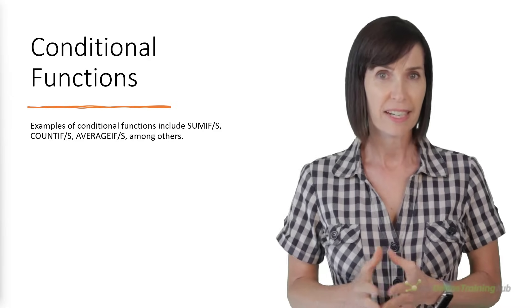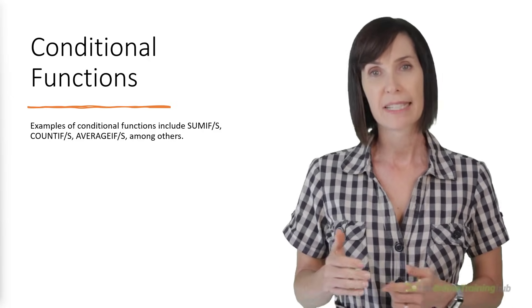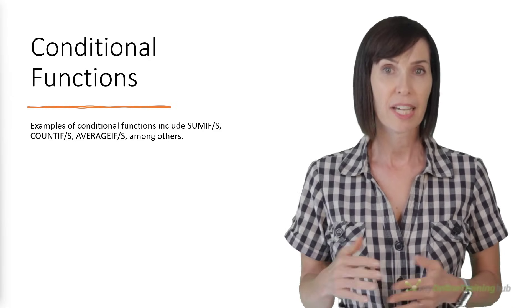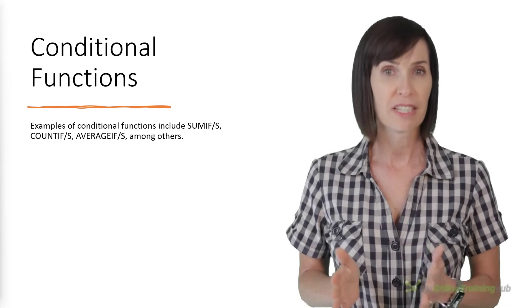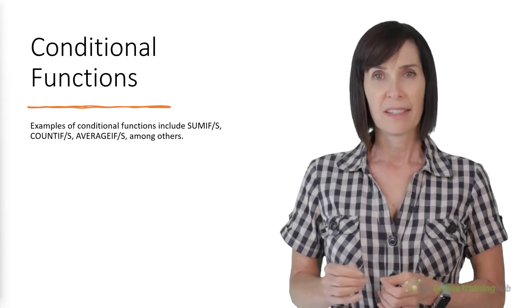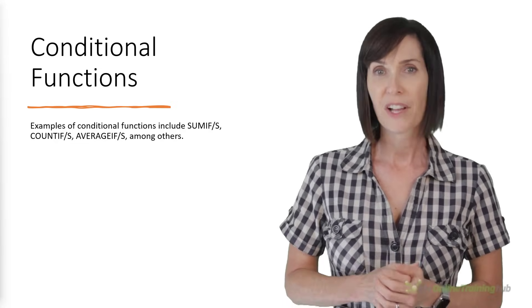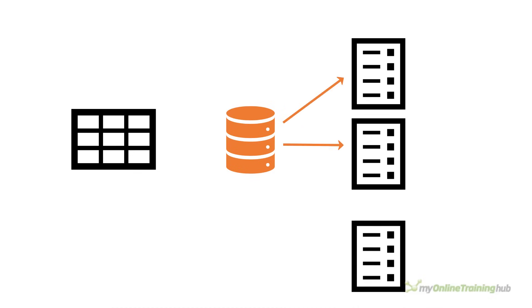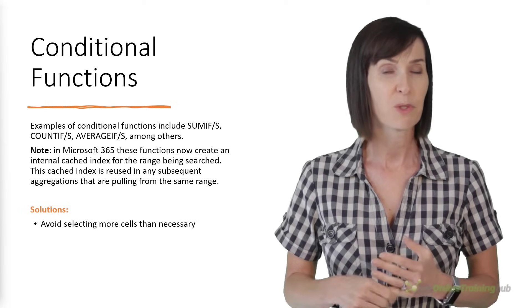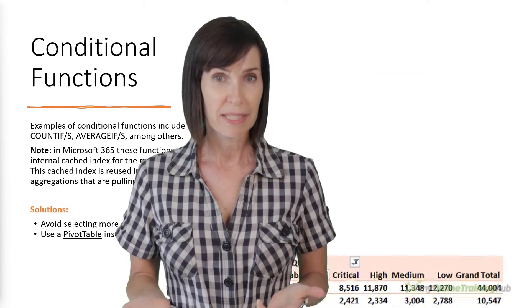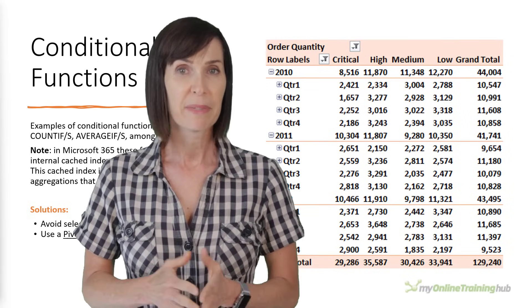Conditional functions in Excel can cause performance issues because they involve testing each cell in a given range against a set of criteria, and that can be time-consuming and resource intensive, especially for large datasets. Now, as with the lookup functions, in 365, these functions now create an internal cached index for the range being searched. And this cached index is reused in any subsequent aggregations that are pulling from that same range. So the solutions are to avoid selecting more cells than necessary, or use a pivot table instead. Pivot tables can perform these calculations, and you don't even need to know how to write the formula.